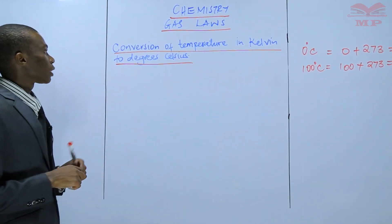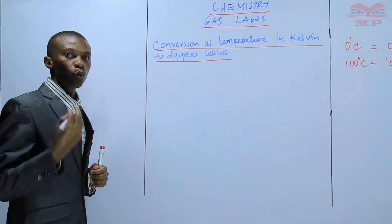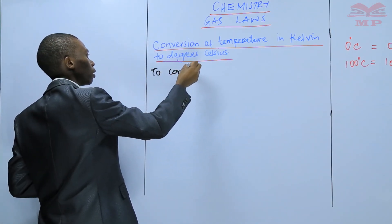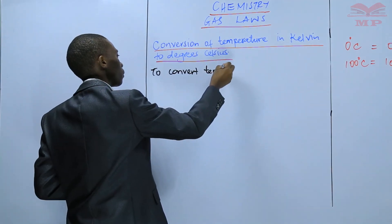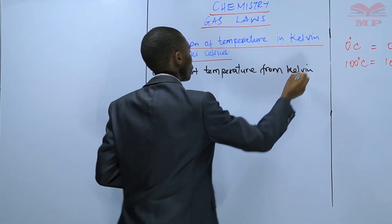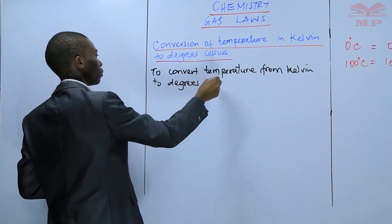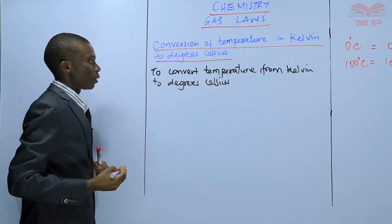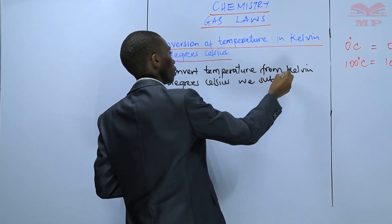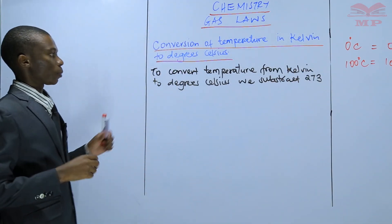For you to be able to convert temperature from Kelvin to degrees Celsius, we subtract 273. So to convert temperature from Kelvin to degrees Celsius, we subtract 273.